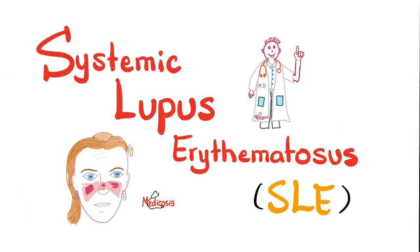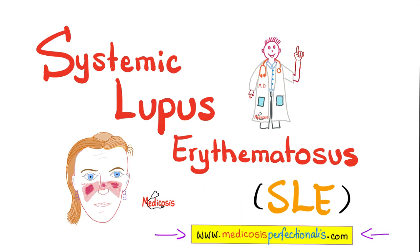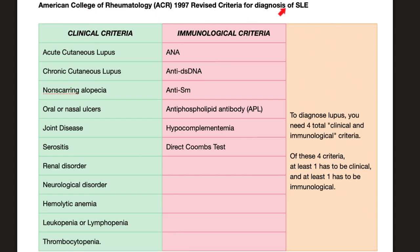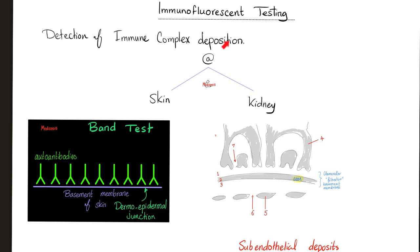Let's talk about lupus quickly. What's the most common visceral organ involved in lupus? It's the kidney — we call it lupus nephritis. There are many criteria to help you diagnose lupus, and one of them is kidney disease. In lupus, we have immune complex deposition in your skin and in your kidney. When it comes to the kidney, these are subendothelial deposits that are granular in pattern.